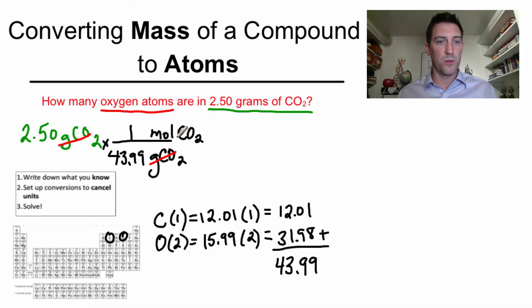We cancel the units. Grams of CO2 cancels with grams of CO2. If I stop doing any work, my answer would be in moles of CO2 right now, but I want oxygen atoms. People start to freak out. What do I do? You stick with the plan right here. You just set up conversions to cancel the units. I need another conversion factor to get rid of moles of CO2. Moles of CO2 on the bottom. That's the only way I can get rid of that. Moles of CO2.